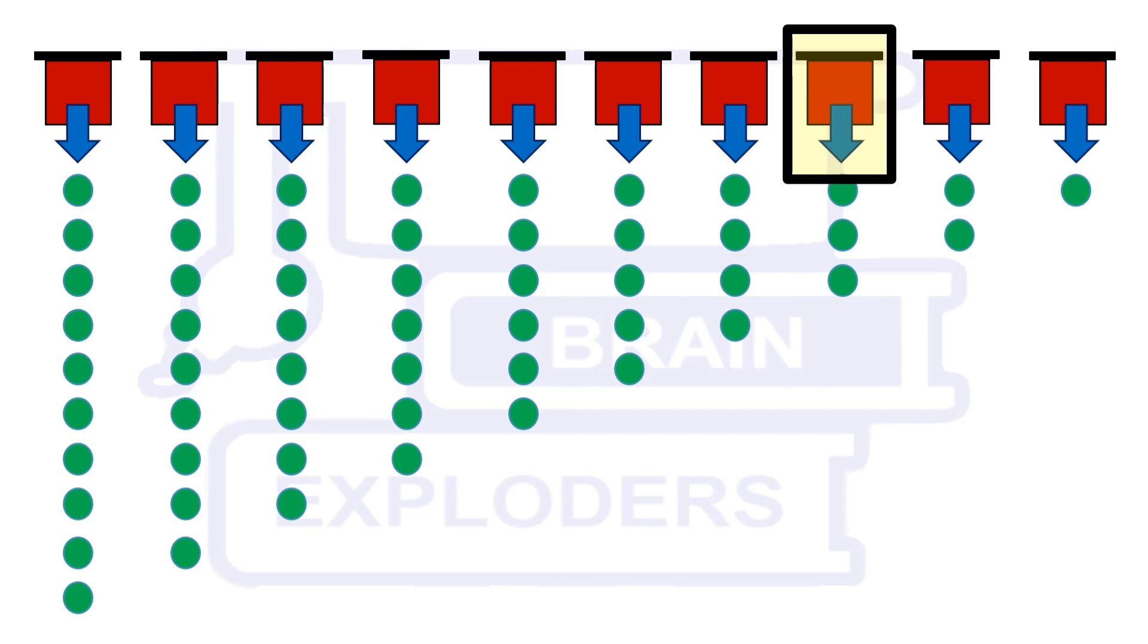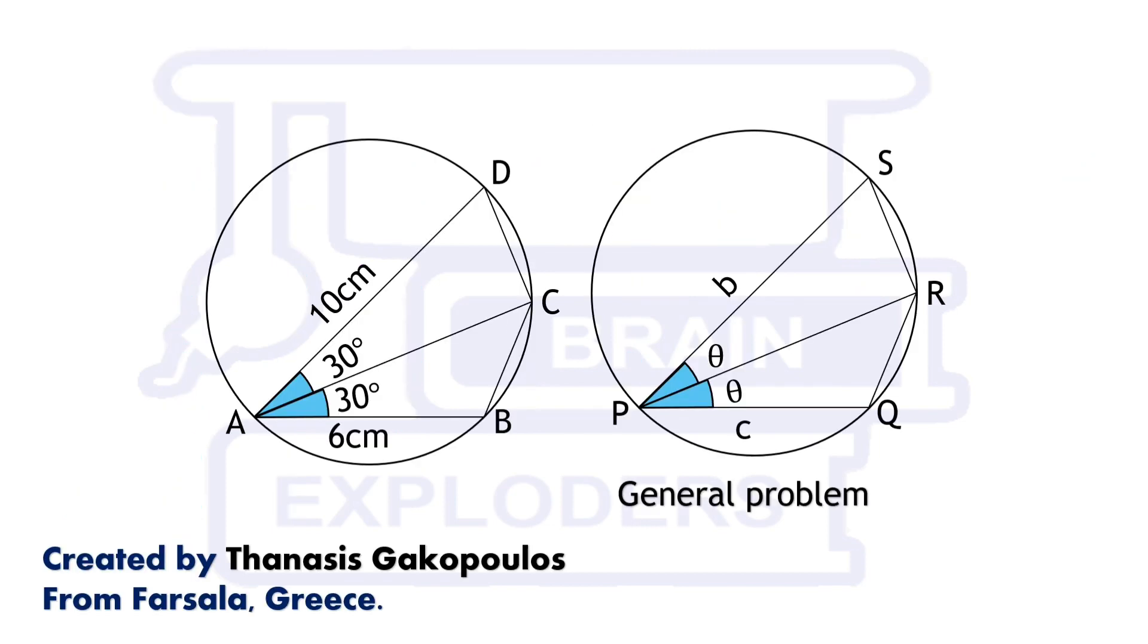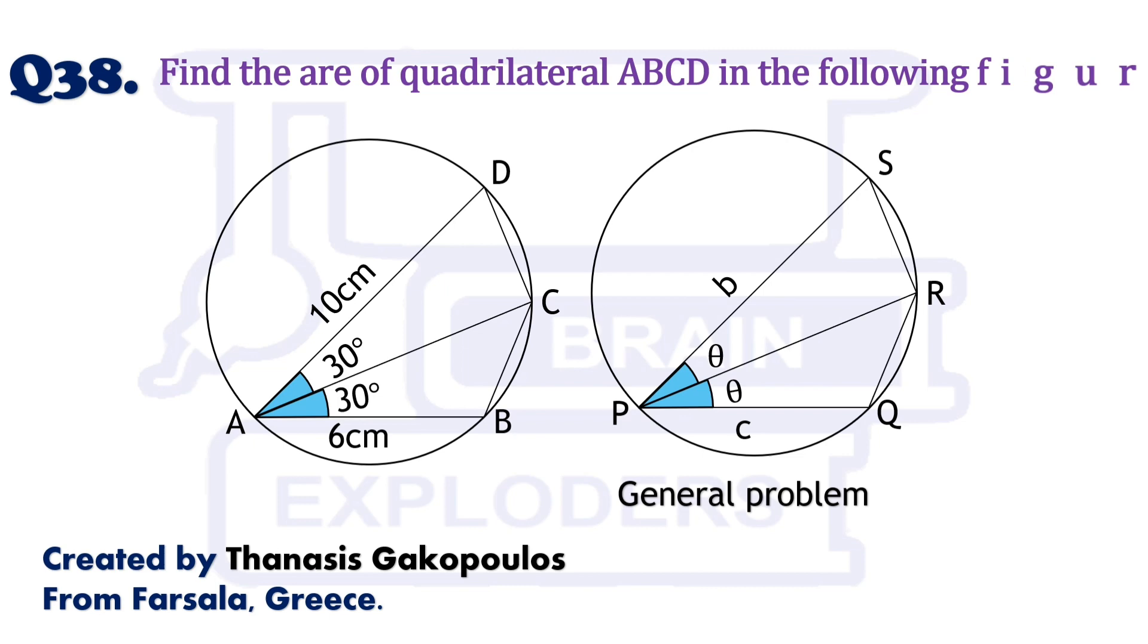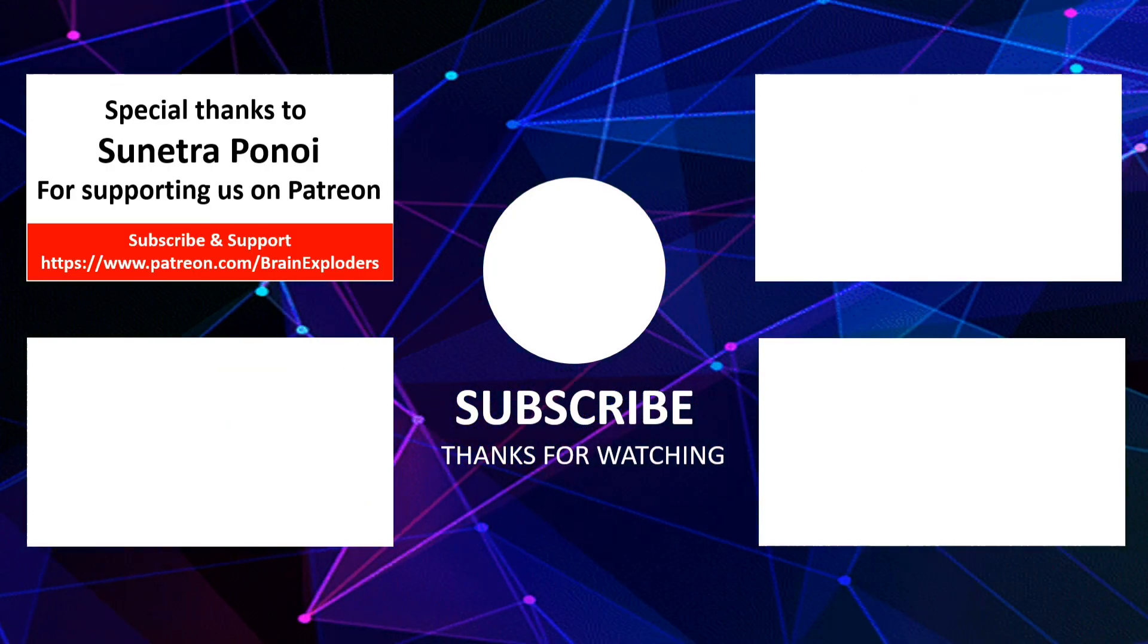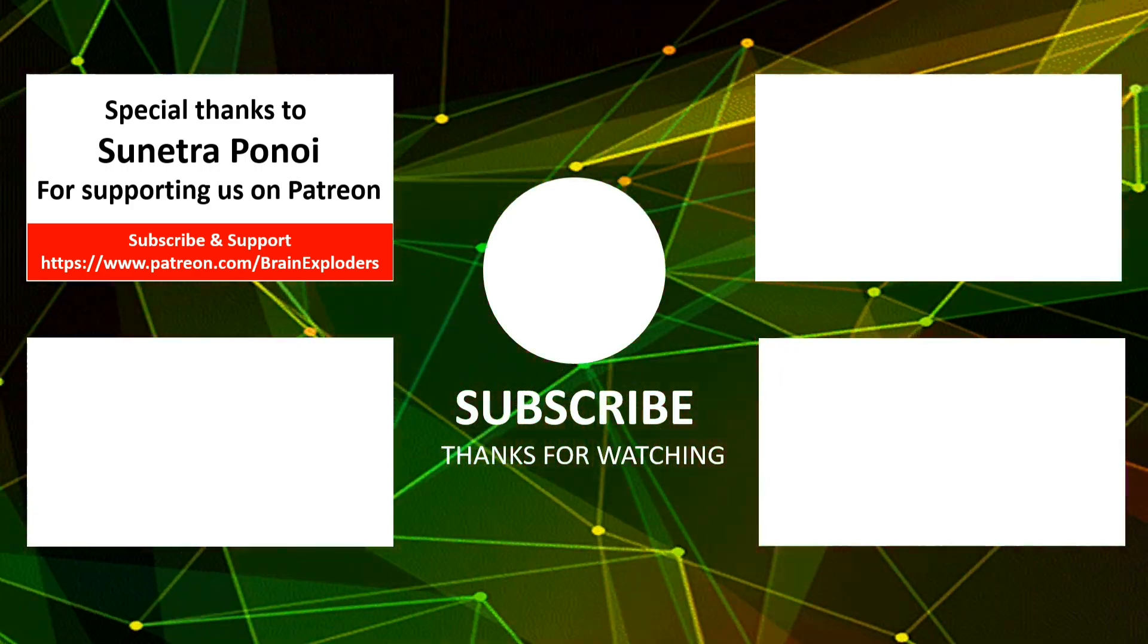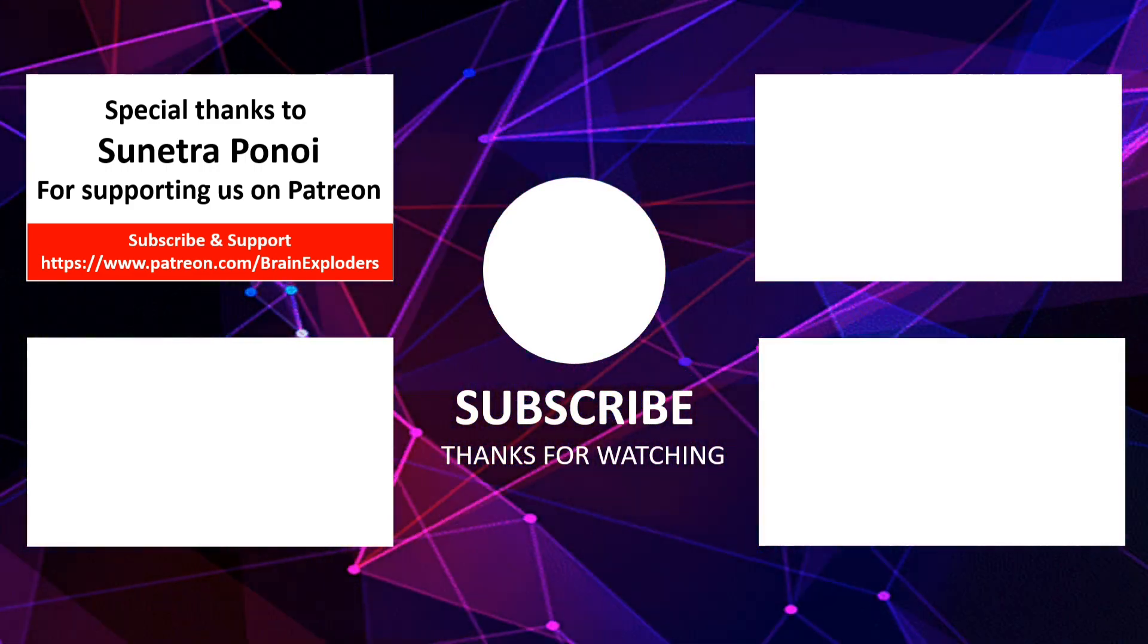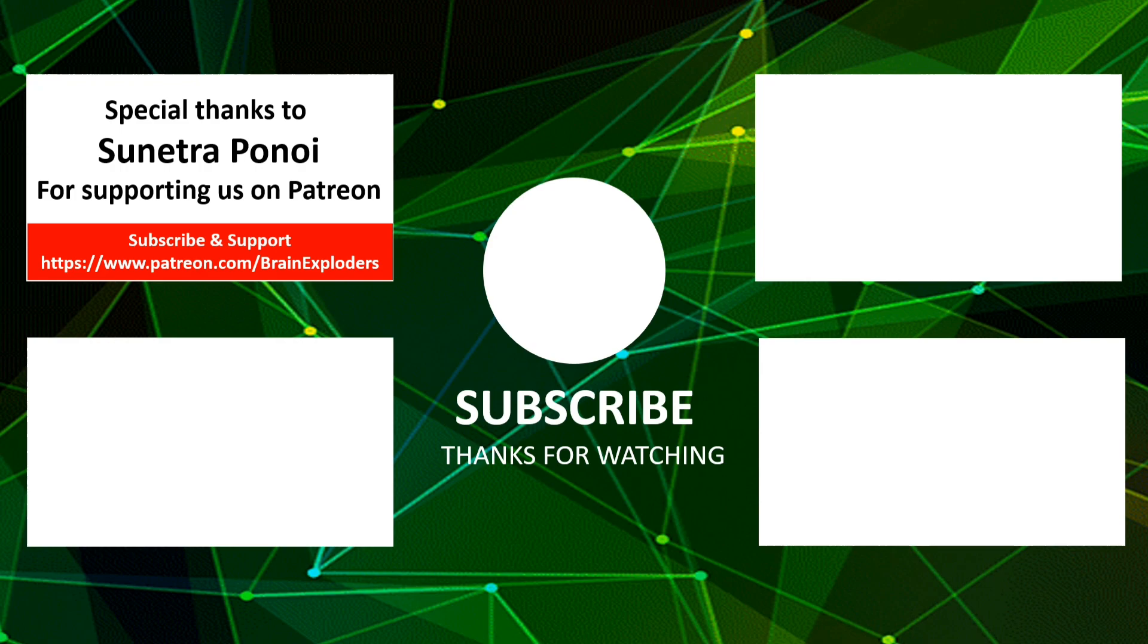This was our solution. Let's move to another question. Find the area of quadrilateral ABCD in the following figure. Try this question and send us your solution and if you have any question like this then please share with us. Don't forget to like and share our video and for more such videos subscribe to our channel Brain Exploders. Thanks for watching.